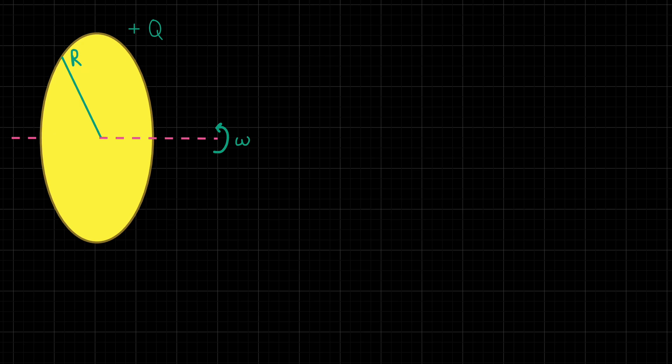Well, you guessed it right. We're going to imagine a unit ring element, set up the formula for the magnetic field created due to that ring element, and then we're going to integrate over the ring elements.